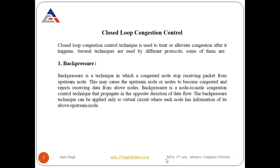The second category is closed loop congestion control. Closed loop congestion control techniques are used to treat or alleviate congestion after it has already happened. Several techniques are used by different protocols. The first is the back pressure technique. Back pressure is a technique in which a congested node stops receiving packets from its upstream node.